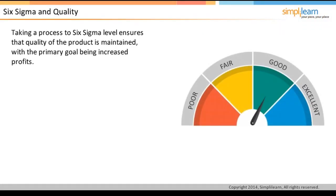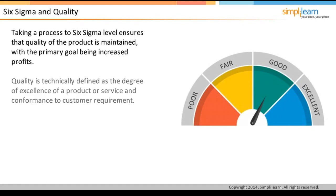Taking a process to Six Sigma level ensures that the quality of the product is maintained. The primary goal of improved quality is increased profits for the organization. In very simple terms, quality is defined as the degree of excellence of a product or service provided to the customer. It is conformance to customer requirements — if the customer is satisfied with the product or service, then it is of the required quality.